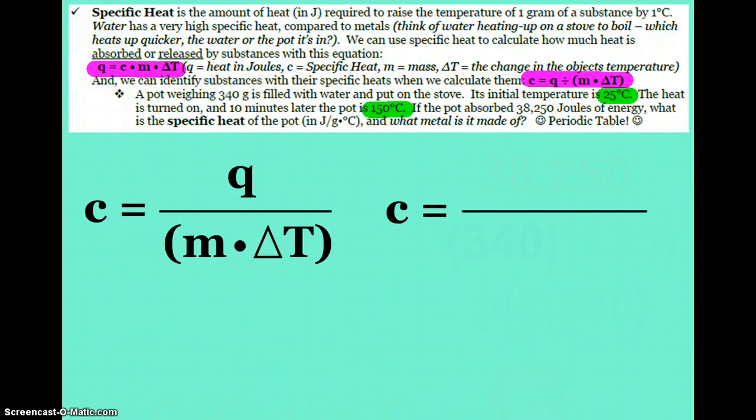And that equation is Q equals cm delta T. You can see that Q stands for heat in joules. C is the specific heat. M is the mass, typically in grams. And delta T is the change in temperature. We can rearrange that equation to figure out and calculate specific heat, which is then Q divided by the mass times delta T.